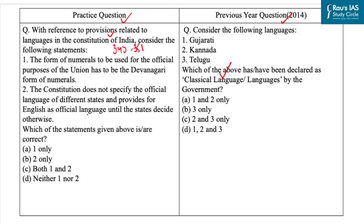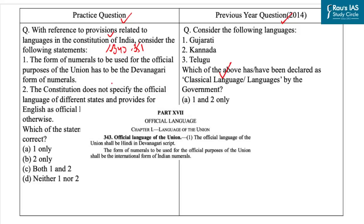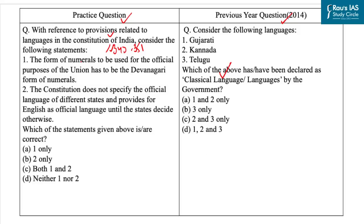According to Article 343, Hindi written in Devanagari script is to be the official language of the union, but the form of numerals to be used for official purposes of the union has to be the international form of numerals and not the Devanagari form. So the first statement is incorrect — it has to be the international form of numerals, not Devanagari.